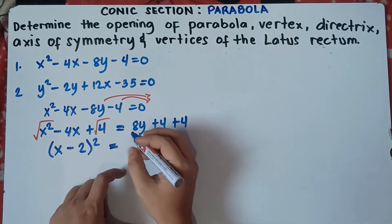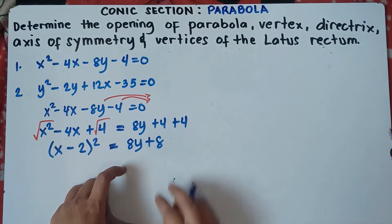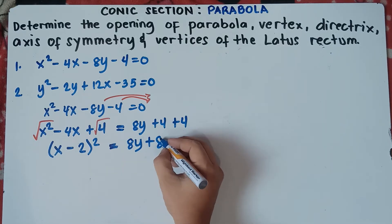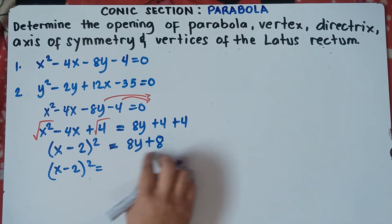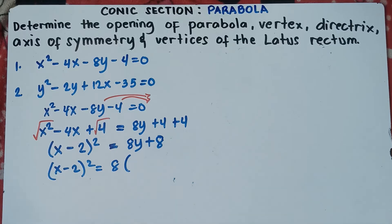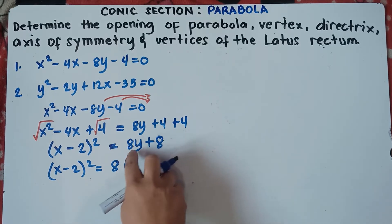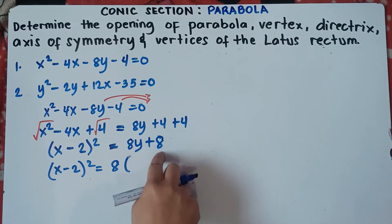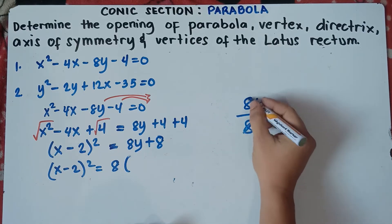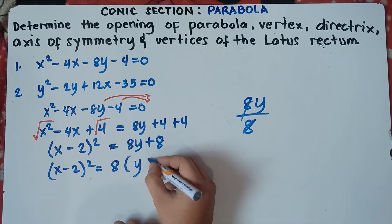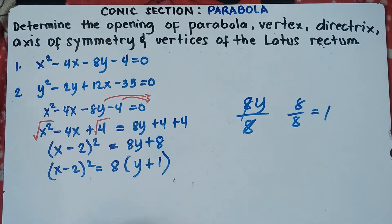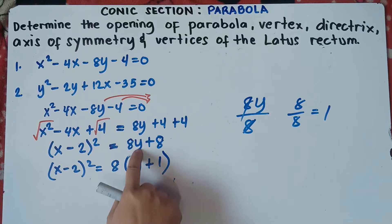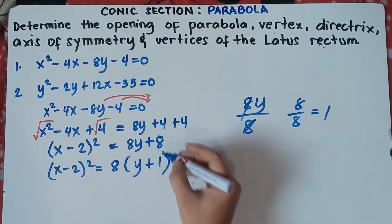Next step is to add the right side. This gives 8y plus 8. We can factor the right side by 8, using the GCF. So this becomes (x minus 2) squared equals 8 times (y plus 1), since 8y divided by 8 is y, and 8 divided by 8 is 1. To verify: 8 times y is 8y, and 8 times 1 is positive 8. So this is our standard form equation.